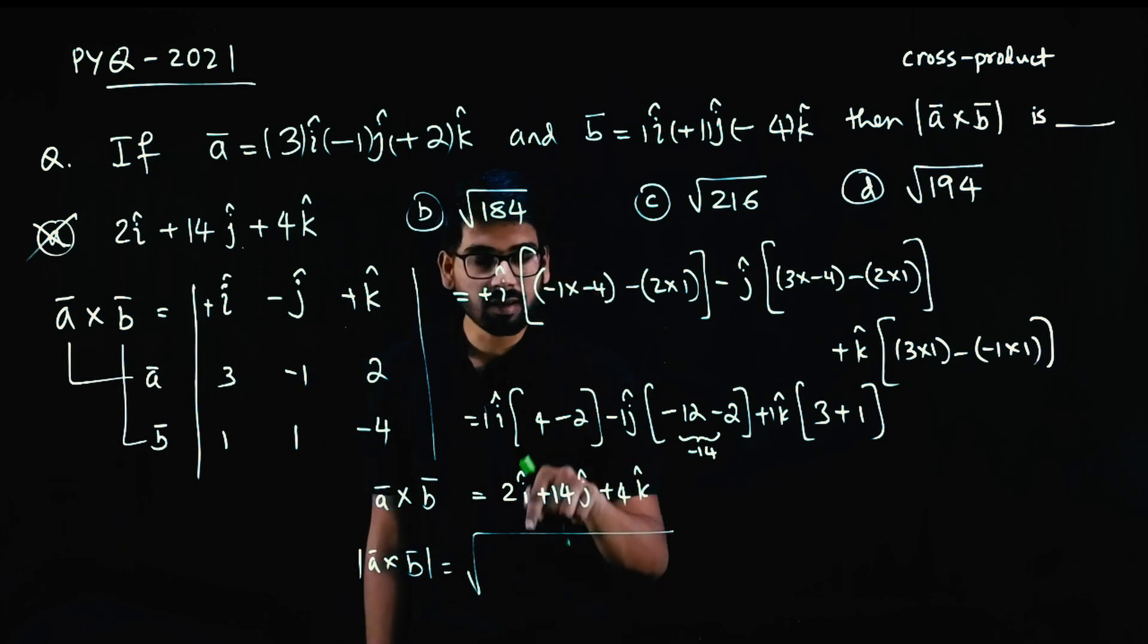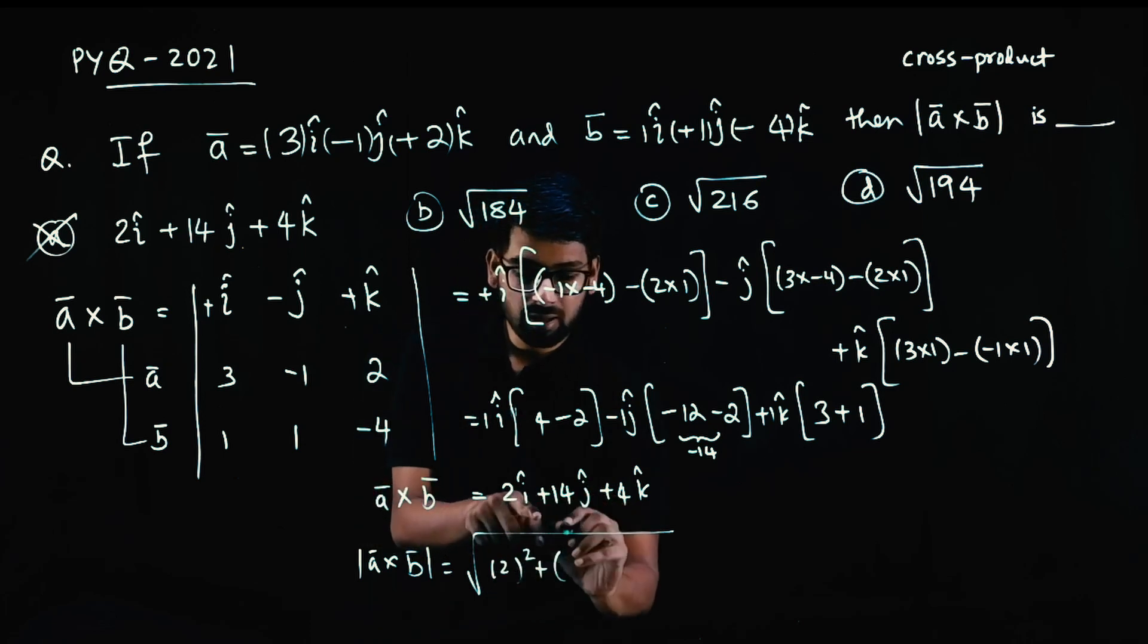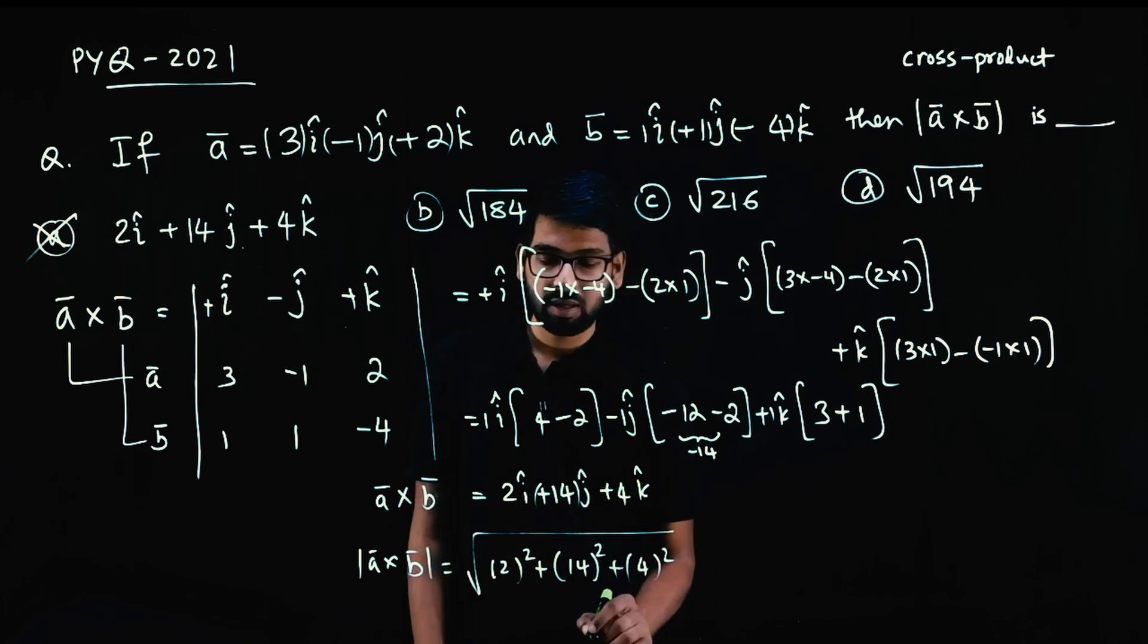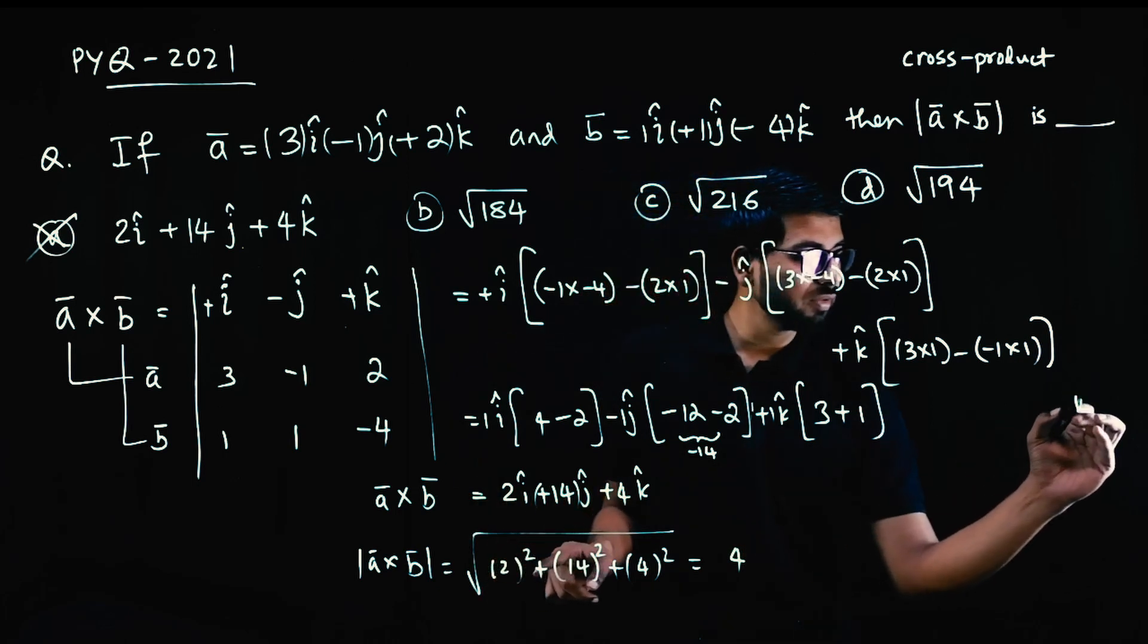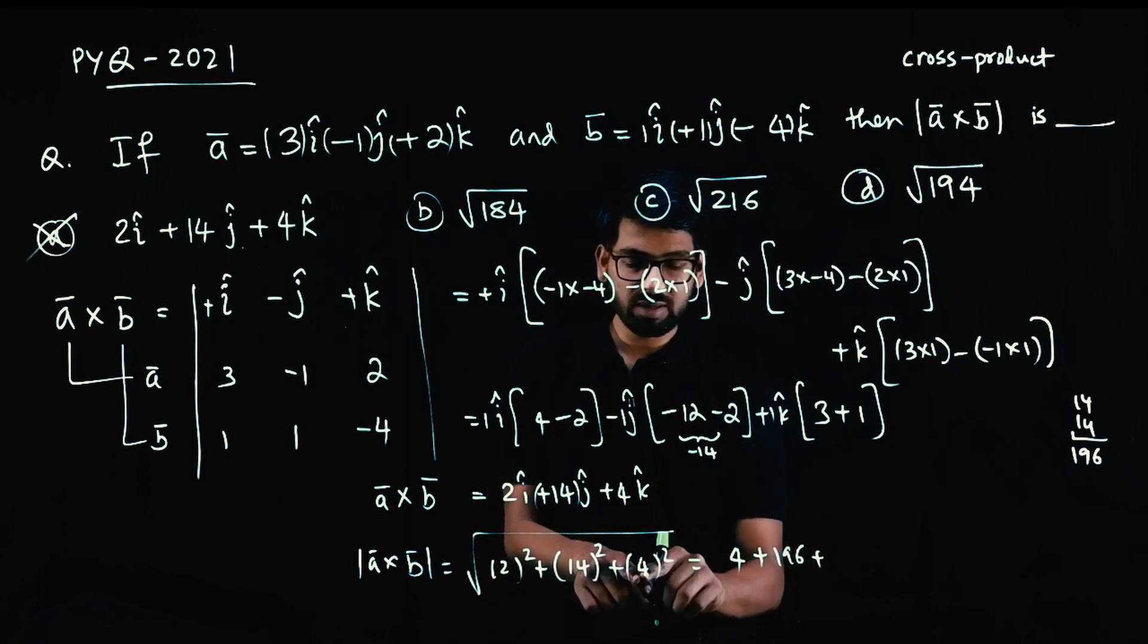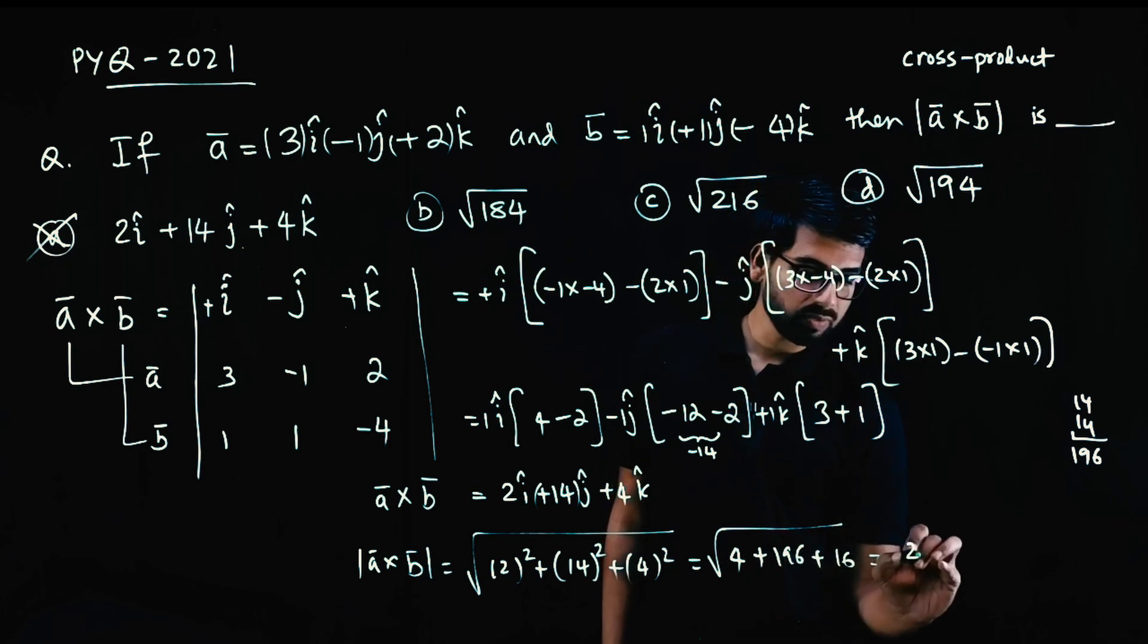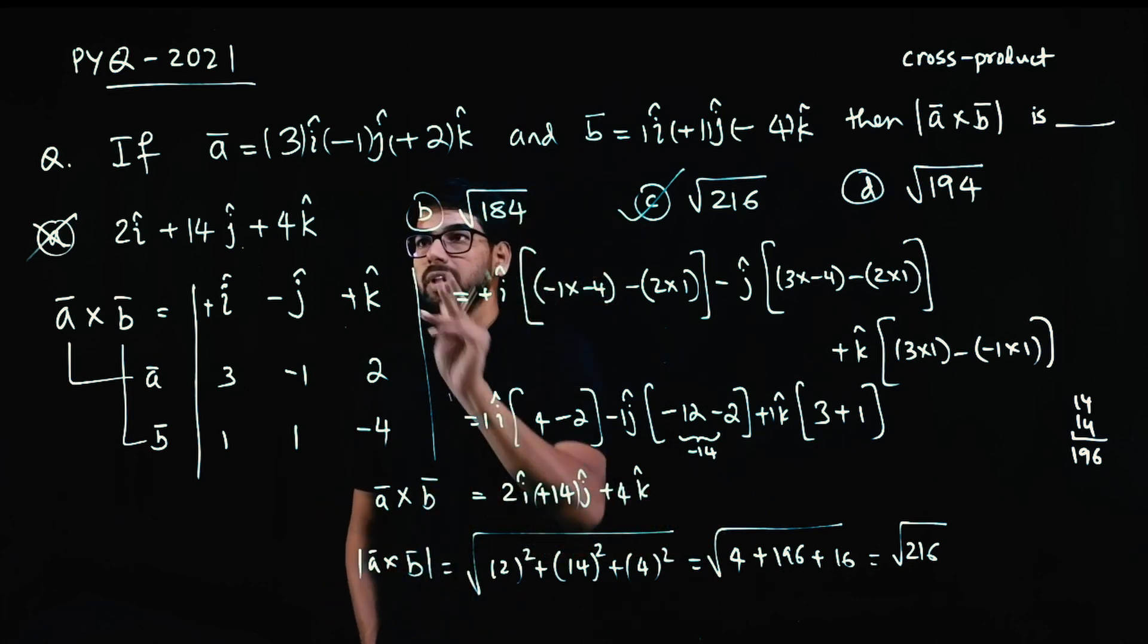How do you take magnitude? It is the square root of sum of square of coefficients. i coefficient is 2, so 2 squared plus j coefficient is 14, so 14 squared plus k coefficient is 4, so 4 squared. That will be 2 square is 4, 14 square is 196, 4 square is 16 under root. So that will be 216 square root. That is the answer. Here we have magnitude of cross product.